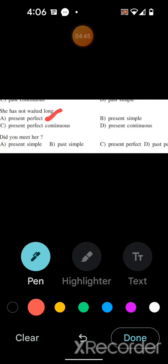Last one: did you meet her? This is simple past. Because if it was simple present, it would be do you meet her. Present perfect would be have you met her. Past perfect would be had you met her. So this is simple past.